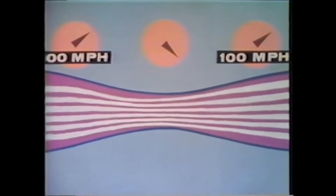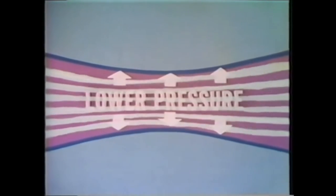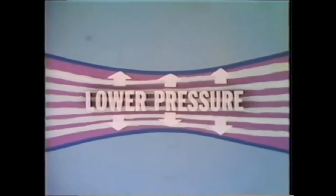But the interesting thing is that in order for the air to go at the faster speed through the narrow part, something has to balance this change in velocity, this speed difference. What changes is the air pressure in the narrow part. This pressure is significantly lower than the pressure at either end.